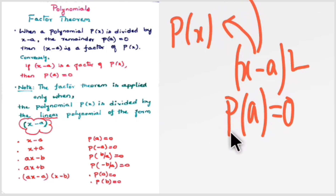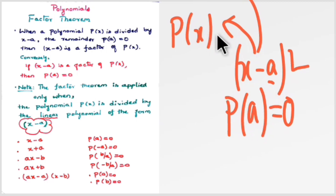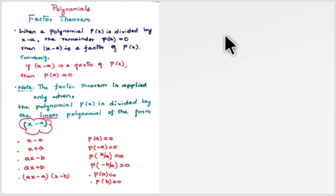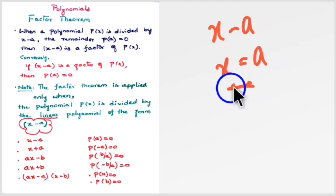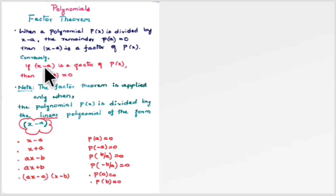So if p(a) is equal to zero — whatever value is in place of 'a' — you substitute that value into p(x) instead of x, and equate to zero. In simple terms, whenever a polynomial and a divisor (x − a) are given, just shift 'a' to the other side: if it is (x − a), take x = a and substitute. Conversely, if (x − a) is a factor of p(x), then p(a) is equal to zero.